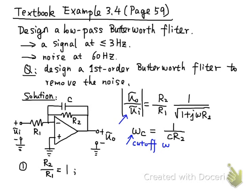Now we need to select resistance values. Because R1 will be equal to R2, we just select a kilohm-level resistance for both. Let's say R1 equal to R2 equal to 10 kilohms.